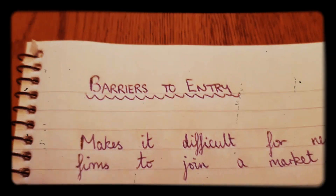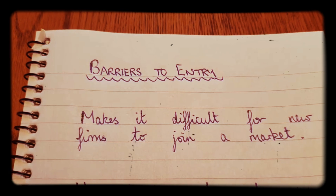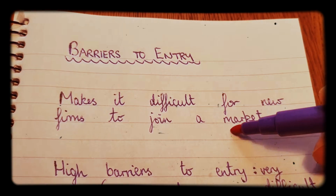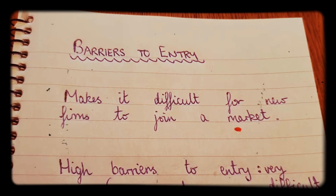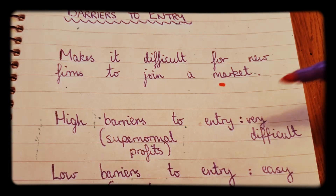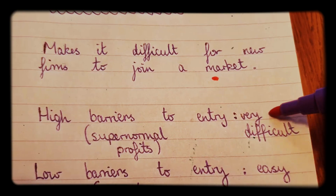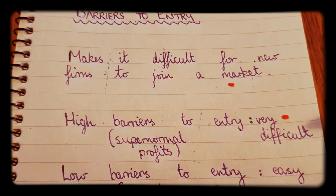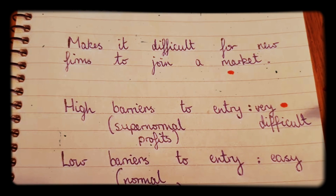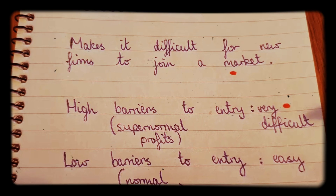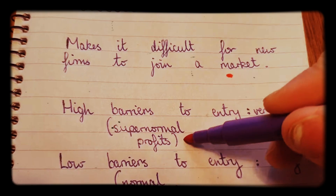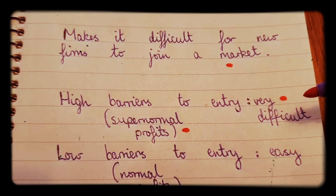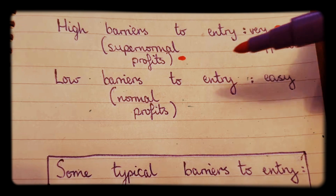In today's video we're going to be looking at barriers to entry. A barrier to entry is something that makes it difficult for new firms to join a market. High barriers to entry mean it's very difficult to enter a market, and because it's very difficult to enter a market, the market has very limited competitors. The firms within the market — for example, it might be a monopoly firm — are able to make supernormal profits because there's not many people in the market to compete with.